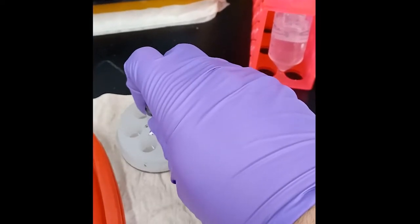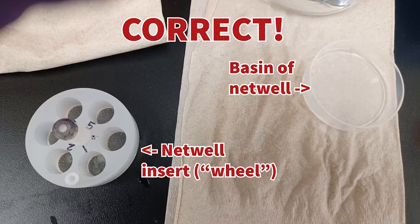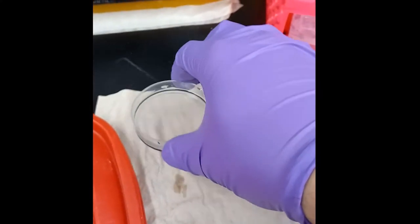Now, for each of the net wells, separate the netted insert wheel from the clear basin as shown here. Place the netted insert on the counter, not on a paper towel. We do not want to dry these netted inserts out. Pour the solution of these basins into their appropriate tubes.